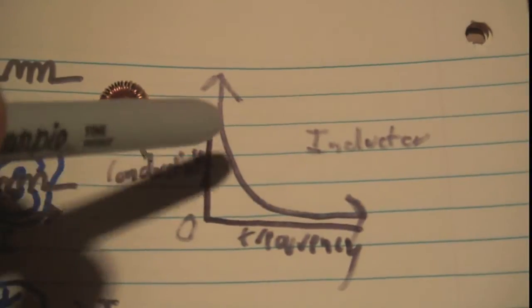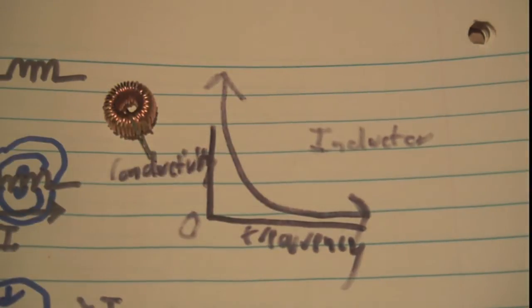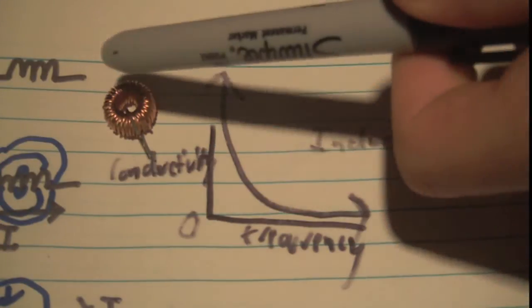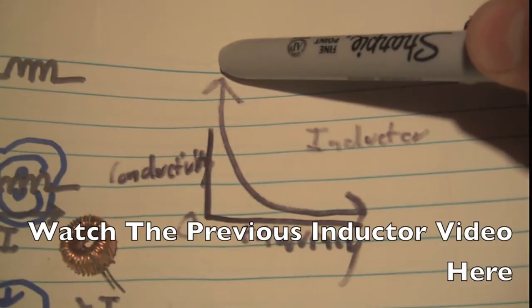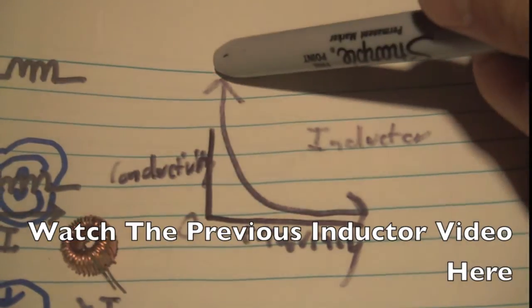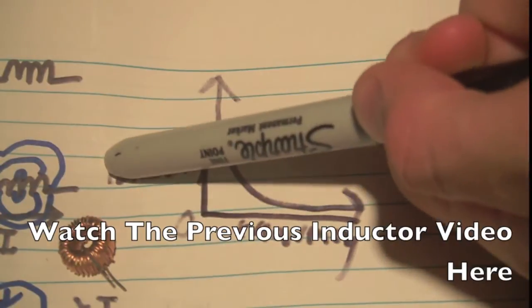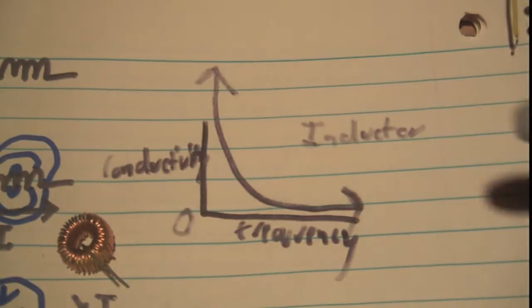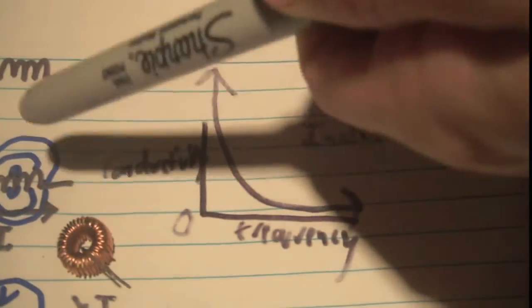Plot a chart of conductivity versus frequency for an inductor. If you think about it, an inductor is just a piece of wire for an ideal inductor. So it's going to have an infinite conductivity at zero frequency DC, because it's just a piece of wire. As the frequency goes up, the magnetic field is going to have to change more and more, and so it's going to have less conductivity because the magnetic field resists that change.